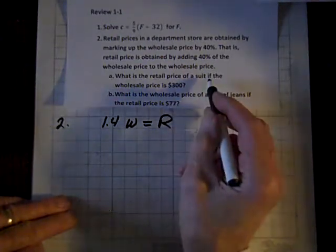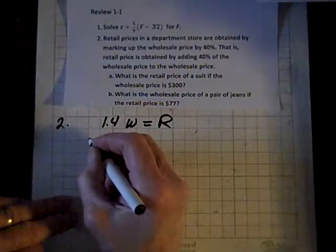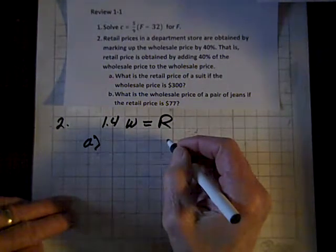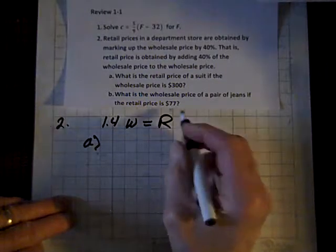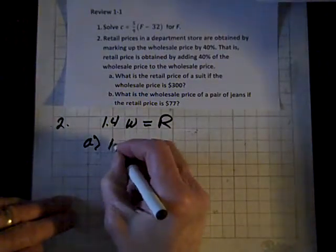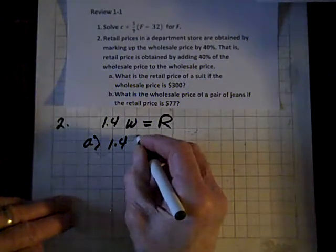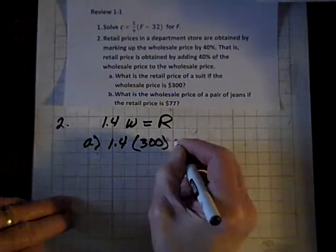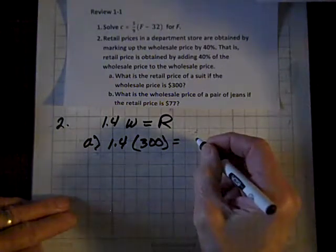and we're told that for part A, the wholesale price is 300. So they want to know what the retail price is. So 1.4 times 300 equals the retail price.